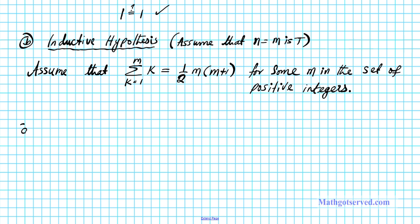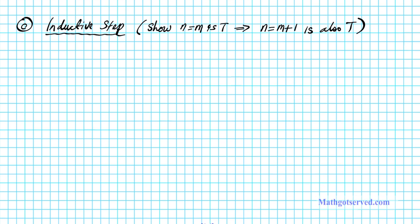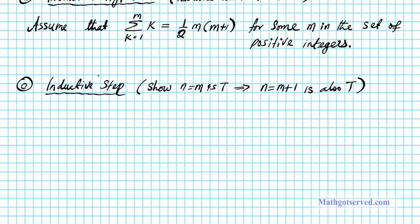Now the next part is the inductive step. Can we show that the next integer value after m holds true using the assumption that m is true? We want to show that n equals m being true implies that n equals m plus 1 is also true. So we start by looking at the discrete sum from k equals 1 to m plus 1 of k.